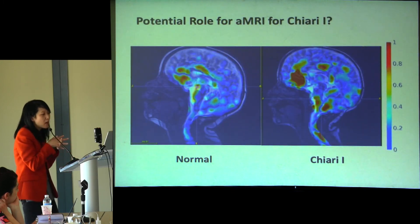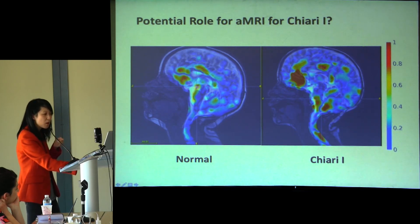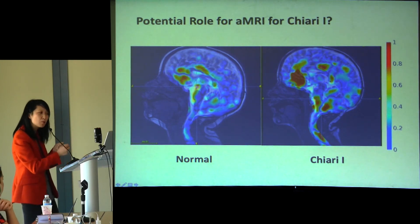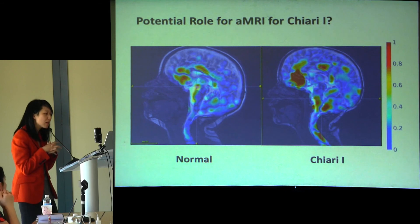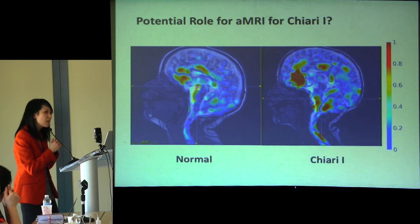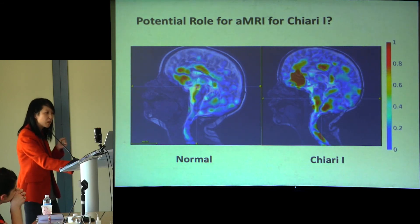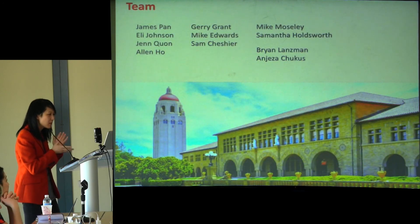We looked at some normal kids and Chiari 1 kids and generated heat maps of motion. There seems to be a lot of motion, and things may be moving differently — even in the supratentorial brain — which was interesting. This needs to be done in an organized fashion. It would be really good to look at pre and post-decompression kids, and kids who have symptoms versus not. This is work we're exploring, and I wanted to share what we're cooking up with Jerry and other folks at Stanford. We have physicists, neurosurgeons, students, and residents working together. Thank you.